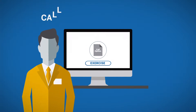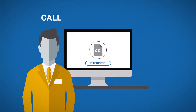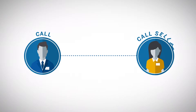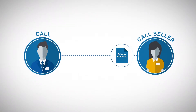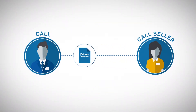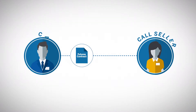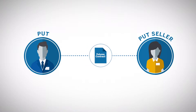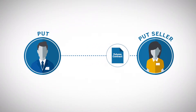The term call actually tells us what direction the underlying instrument will move. For a call option, that activity is referred to as calling the underlying away from the option seller. Similarly, a put option gives the owner of the option the right to put the underlying future to the seller of the option.